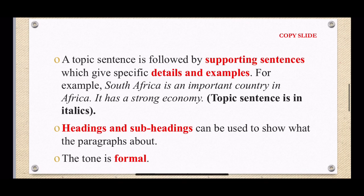So a topic sentence is followed by supporting sentences which give specific details and examples. So for example, South Africa is an important country in Africa. It has a strong economy. So this topic sentence that they gave us the example we can see it's written in italics. So it gives us the immediate heading or what the text is about.